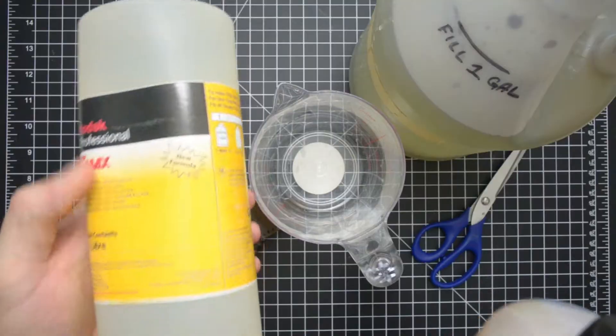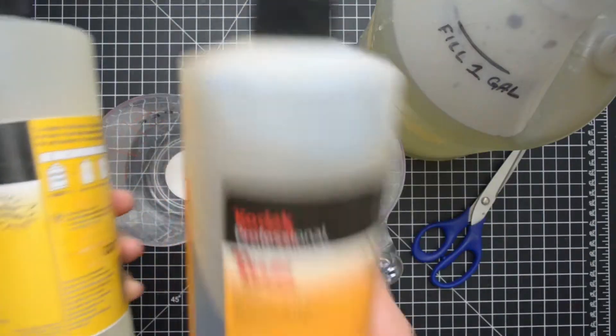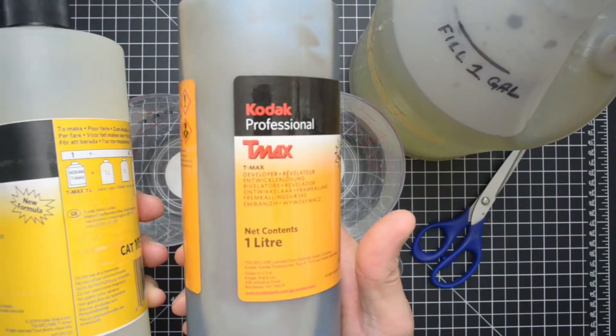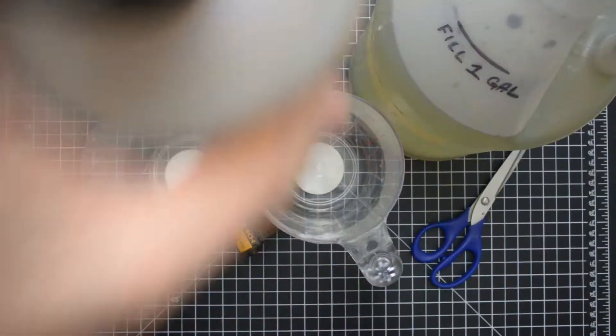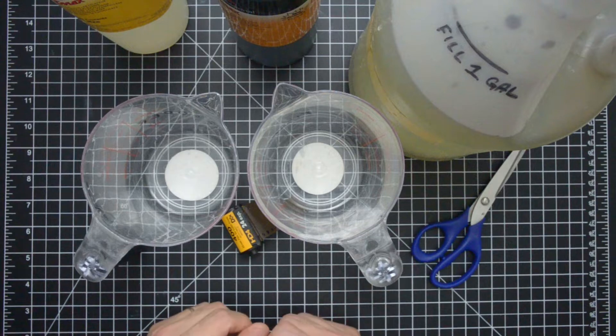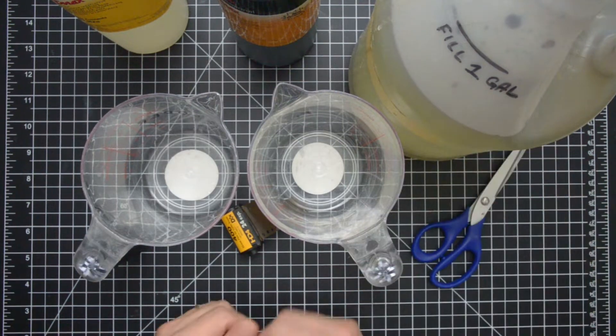As you can see, this is a fresh unopened bottle and then this is the bottle that I opened up and used once and it's already gone to this brown color. So today I'm going to test this and just see if it's still good, and the same thing, we'll go ahead and test the fixer as well.